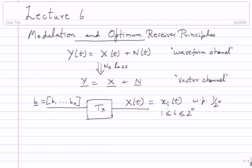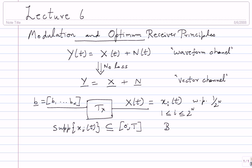There's information missing about data rate. The support of x_i(t) is contained in [0, T], meaning you take a total time T seconds to transmit these n bits, so the bit rate is n/T bits per second. I've just given names to the various quantities involved and made things concrete. Notation is half the battle — once you describe everything in notation, the analysis often becomes very obvious.